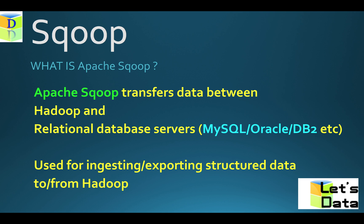Apache Sqoop is a tool, or we can say framework, which is used to transfer data between Hadoop and relational database servers. In many existing systems we already use database servers and have data present.